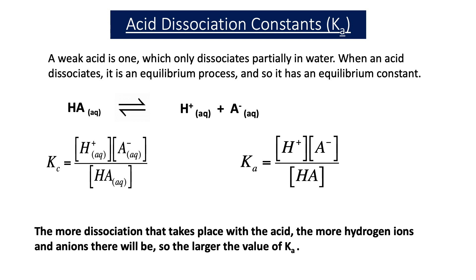If we consider the weak acid HA, it splits up into H⁺ ions and A⁻ ions. The equilibrium constant — the acid dissociation constant — would be equal to the concentration of H⁺ ions times the concentration of A⁻ ions, over the concentration of the acid HA. The more dissociation that takes place, the more hydrogen ions and anions there will be, and the larger the value of the acid dissociation constant Ka. So the stronger the weak acid, the bigger the value of Ka.